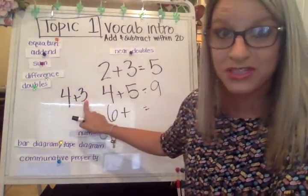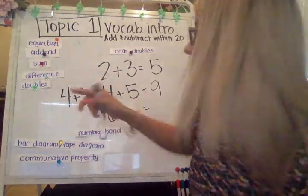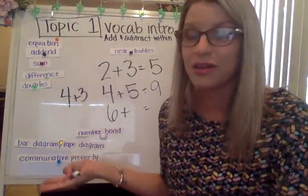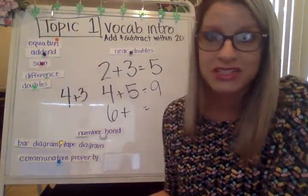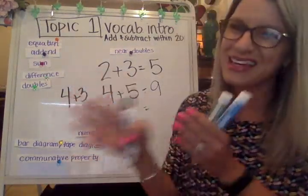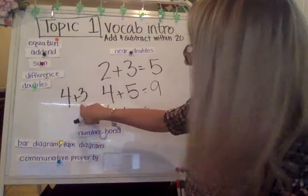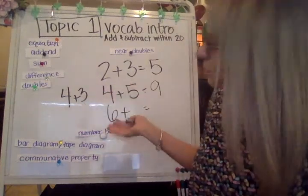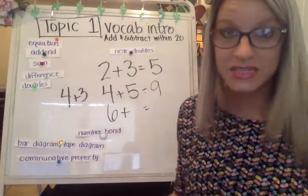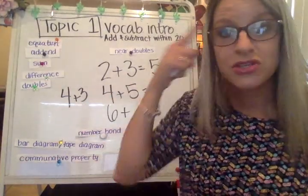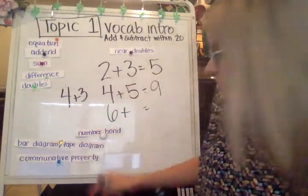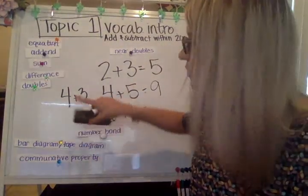I could think: I already know that three plus three is six, and I already know that four plus four is eight, so four plus three is going to be somewhere in between — and four plus three would be seven. So using those doubles facts will help you.